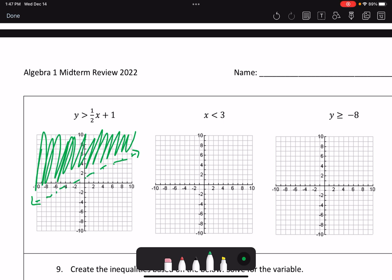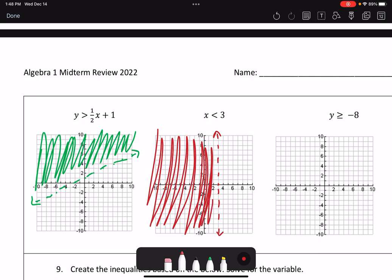My next one is x is less than 3. So I've got to find where x is 3, which is here. And this means that for every y value, x is going to equal 3. But it's not, or it's going to be less than 3. So I'm going to have a vertical line where x is 3. And the x values that are less than 3 are to the left, so my shaded region is all the values on the left.